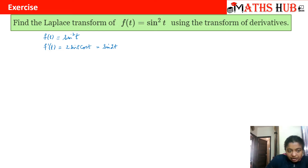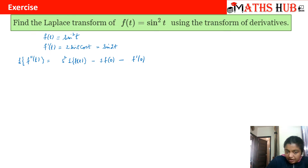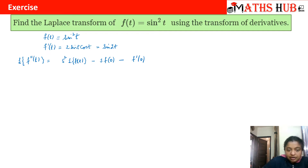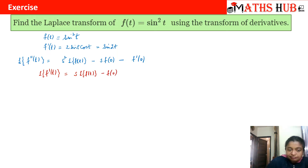We already know the second order derivative formula: Laplace of f''(t) equals s² times Laplace of f(t) minus s·f(0) minus f'(0). We start with the same power of s, decreasing by 1 power each step, beginning with Laplace of f(t). And the first order derivative formula is: Laplace of f'(t) equals s times Laplace of f(t) minus f(0).